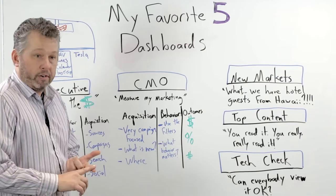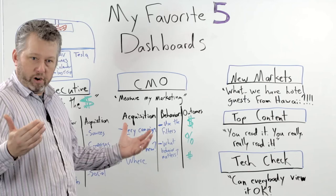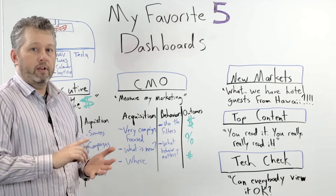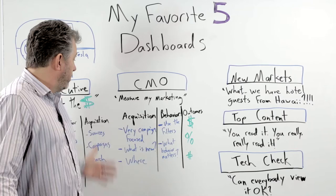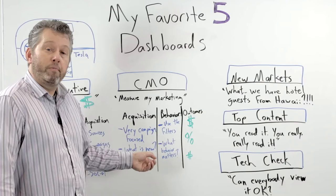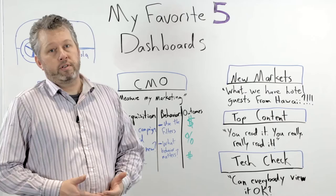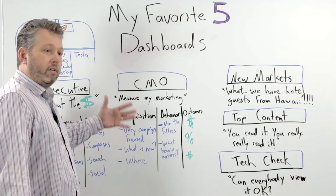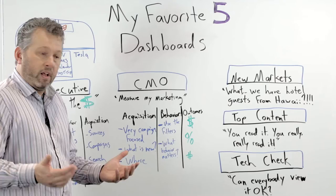One of our clients is Beardbrand — they build beard oil and support the urban beardsmen. We know their main markets are New York, Texas, California, and the Pacific Northwest. We could have a very broad regional focus for acquisition, but we don't. We know where their audience lives, what type of behavior they like, and ultimately what type of behavior on the website influences purchases. Think from a marketing perspective: how do we measure acquisition to behavior on the website, and ultimately what does that create?